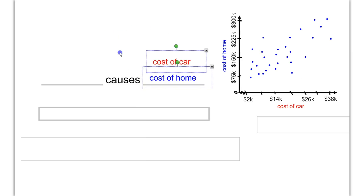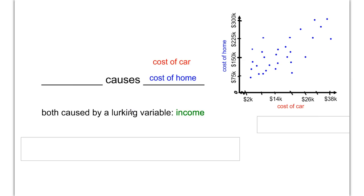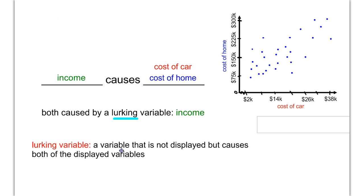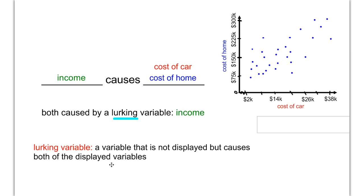I would consider these both response variables to something else called a lurking variable. That's one that's in the background that you don't see. In this case, I would suggest that it's the income of the person. If they have a higher income, they're probably going to be able to afford a more expensive car and afford a more expensive home. So the income causes the car price and the home price. It's in the background. You don't see it. It doesn't show up anywhere on the scatterplot. That's why we call it a lurking variable. It's a variable that you do not see. It does not show up on the graph. Quick definition here: a variable is not displayed, but causes both of the displayed variables.